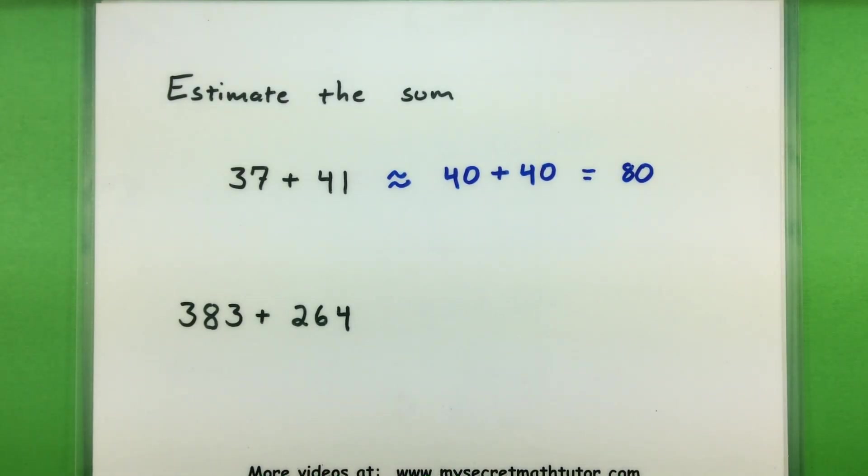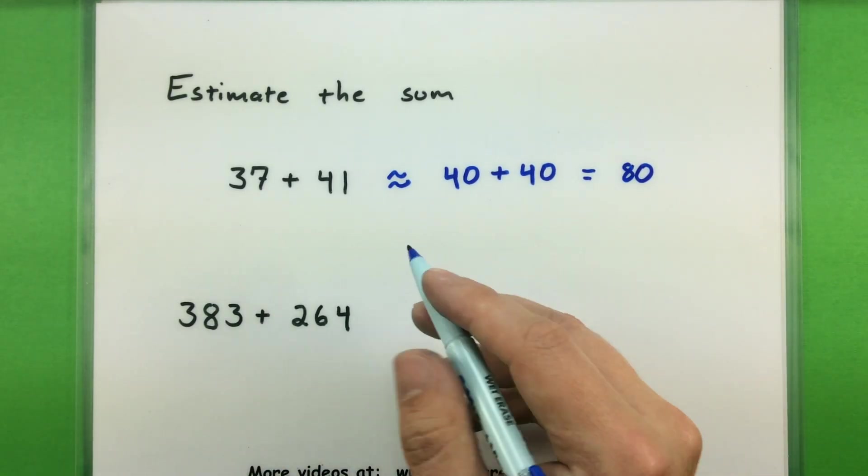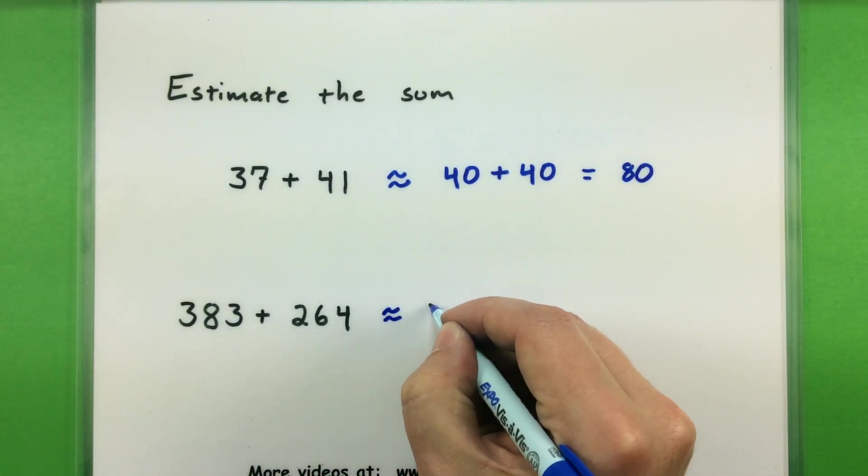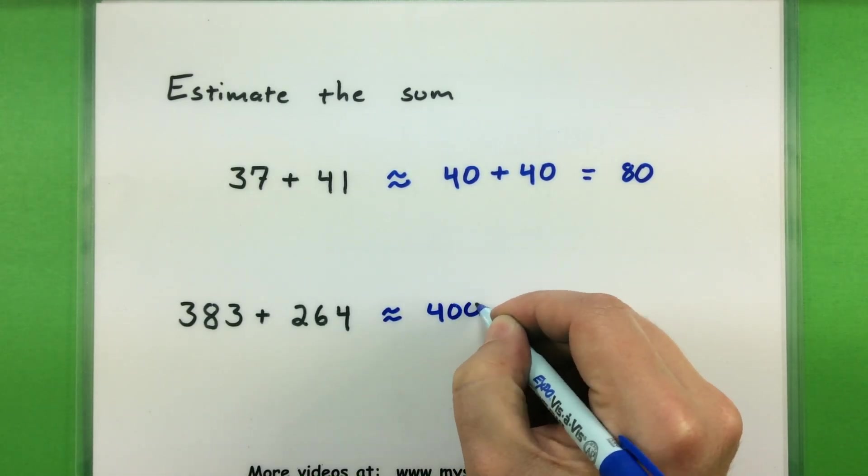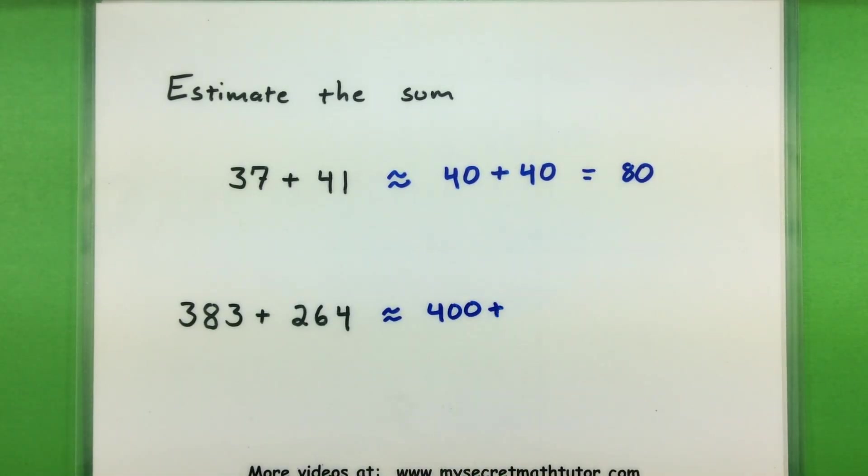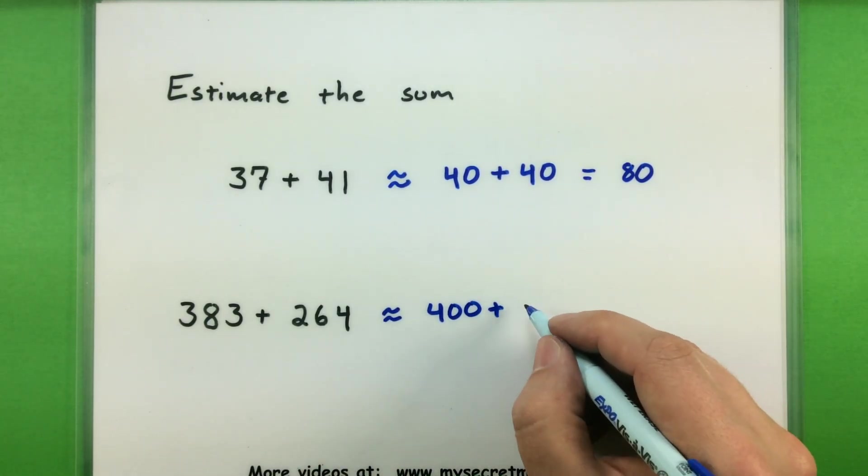Alright, on to the next one. Let's estimate this one. So I'm looking at the three. It looks like this needs to be rounded up to 400. And then my other number looks like this will be rounded up as well. This will be rounded up to 300.